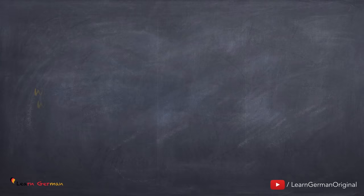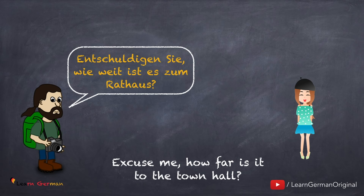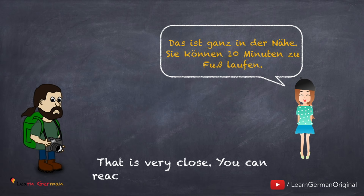Let's look at another example: 'Entschuldigen Sie, wie weit ist das zum Rathaus?' Since the article for Rathaus is 'das', you say 'zum Rathaus'. The answer in this case is: 'Das ist ganz in der Nähe. Sie können 10 Minuten zu Fuß laufen.'